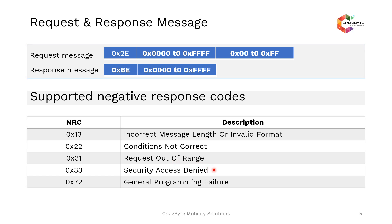NRC 0x33 — Security Access Denied — is sent back when you try to access a memory location secured by a security algorithm, meaning you need to pass the security access in order to write to that location. NRC 0x72 — General Programming Failure — is sent back from the ECU if there is a general programming failure and the ECU does not support the request without first passing security.